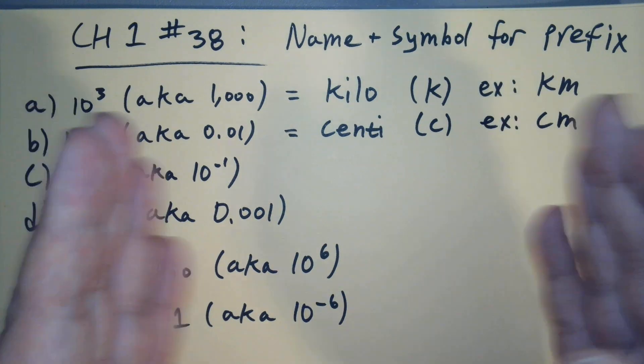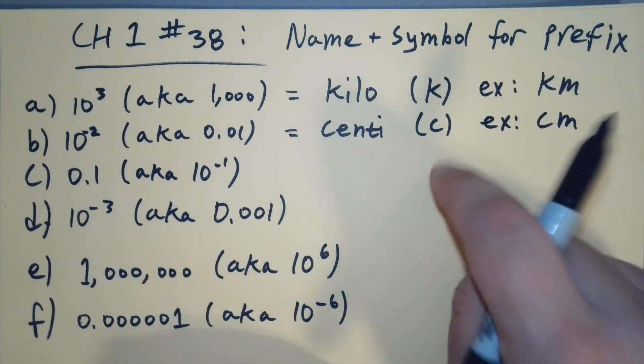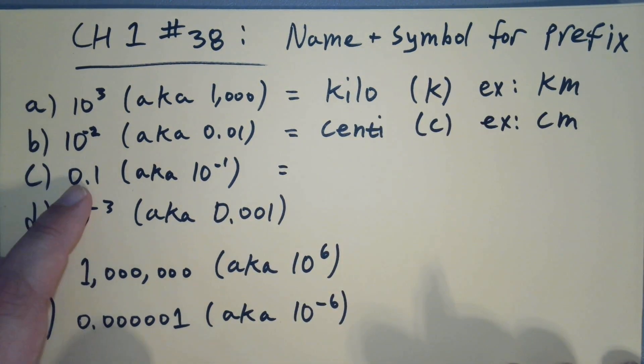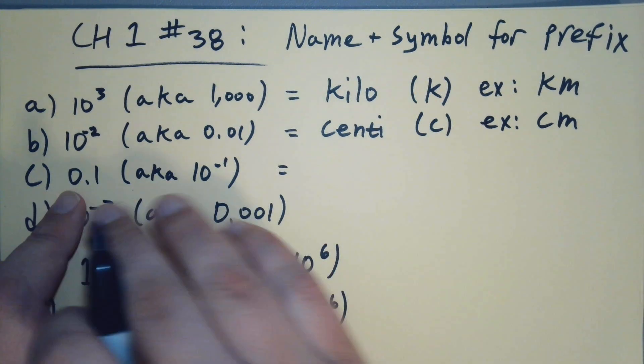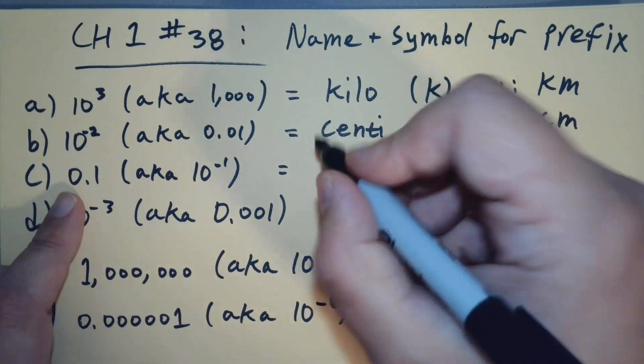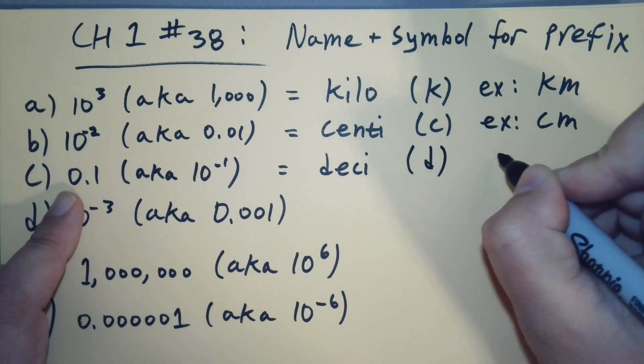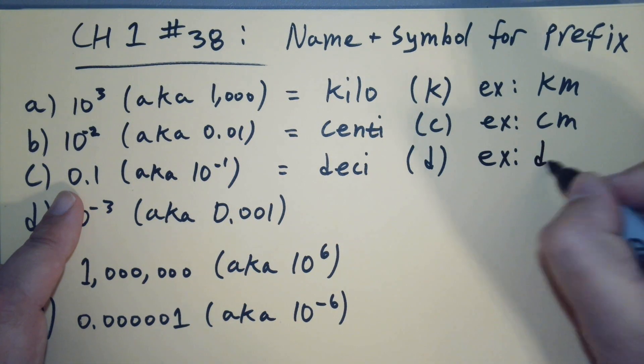So next, 10 to the minus 1, or 1 tenth. So we need 10 of this to get our normal base unit. So this would be 1 tenth of a meter, so 10 of these would equal a meter. And so this would be deci. This is a lowercase d. And so, sticking with the meters, this could be a decimeter.